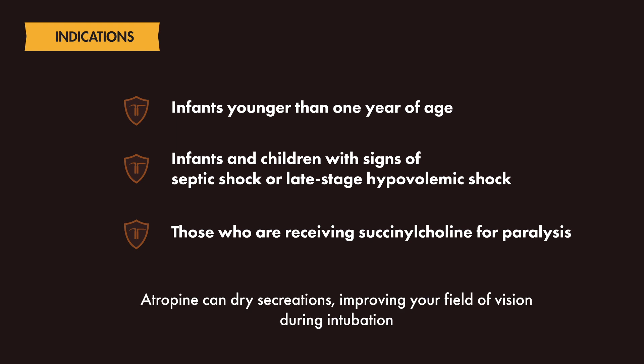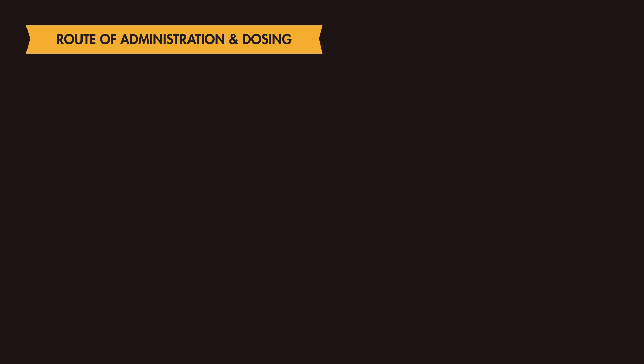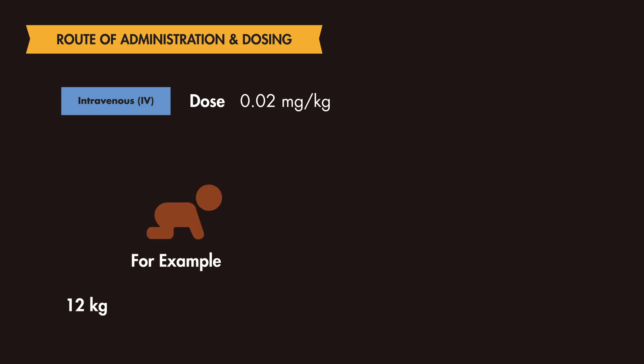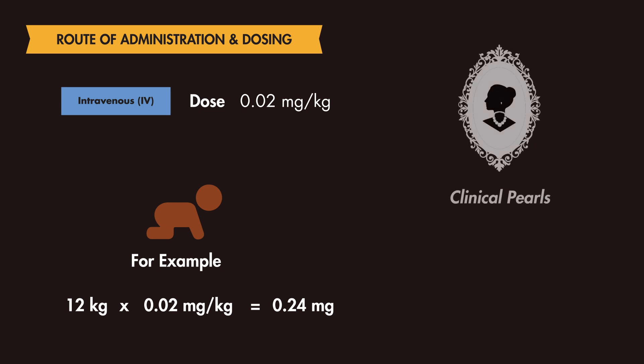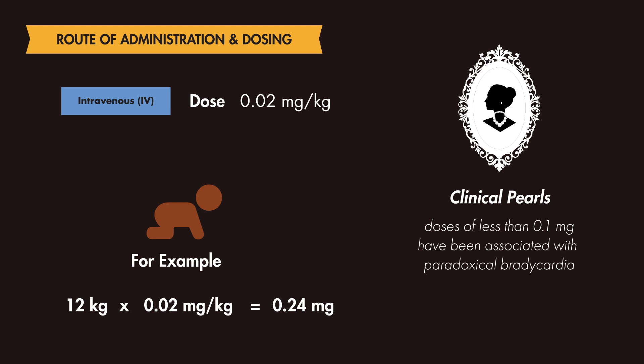Atropine also has a secondary benefit in that it dries secretions and may improve the field of vision during pediatric intubations. The typical dosing is 0.02 mg per kg per dose intravenously, with a maximum single dose of 1 mg and no minimum dose. For a 12 kg patient, that would be 0.24 mg IV in the pretreatment phase. Keep in mind that doses of less than 0.1 mg have been associated with paradoxical bradycardia.